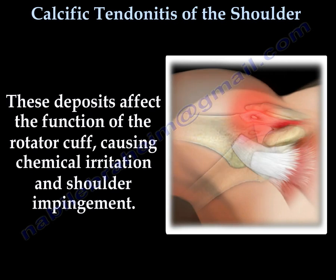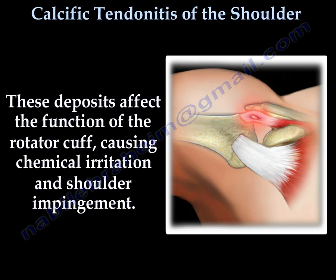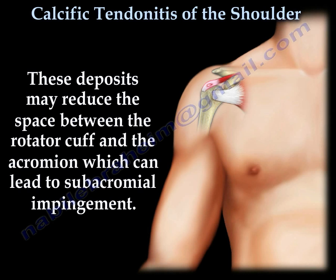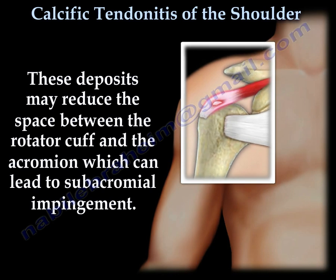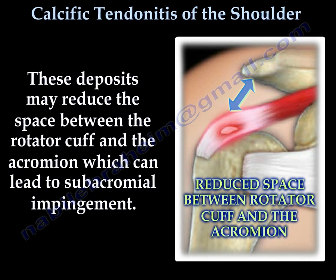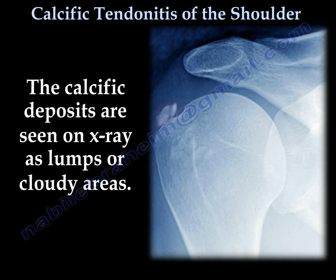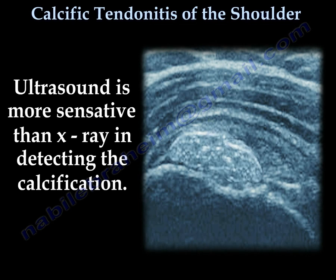These deposits affect the function of the rotator cuff, causing chemical irritation of the shoulder and impingement. The deposits may reduce the space between the rotator cuff and the acromion, leading to subacromial impingement. The calcific deposits are seen on X-ray as lumps or cloudy areas. Ultrasound is more sensitive and actually better than X-rays in detecting the calcification.